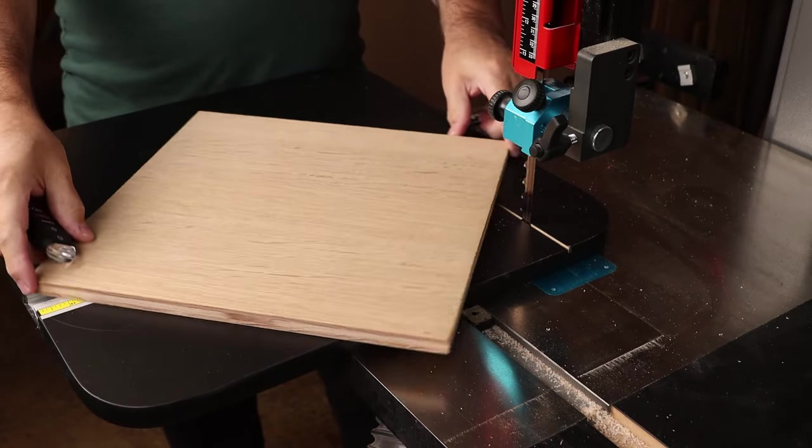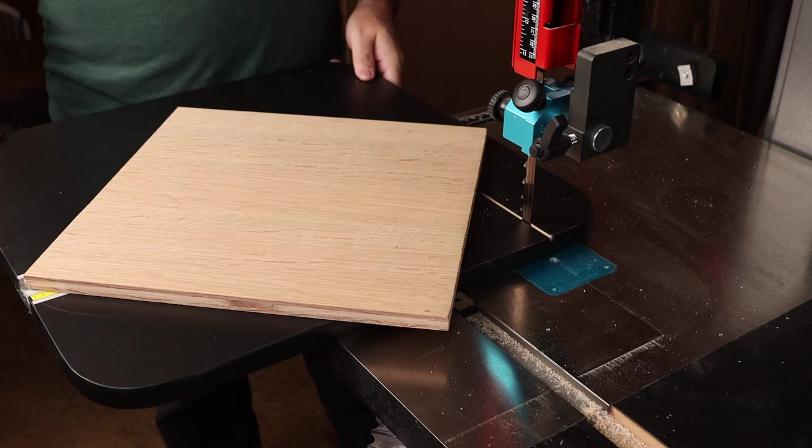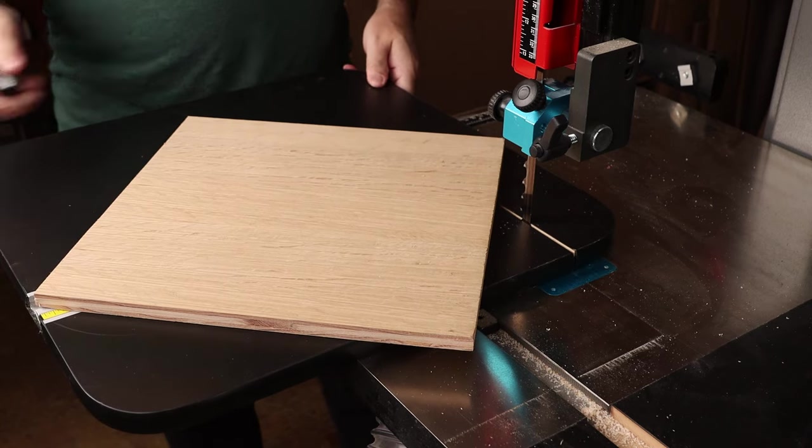Okay, so the board's down on our center point. I have the jig backed out slightly. We'll just advance into the cut and start making the circle.